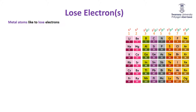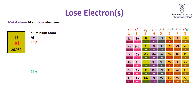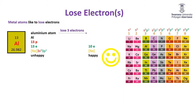Staying on that theme, let's move along a group to the icosagens, a good example being aluminium. Its electron configuration ends in 3s²3p¹ — three valence electrons, and it's unhappy. So it's going to want to lose those 3 electrons, giving it 10 electrons, making it happy with the neon electron configuration. The trouble is the charge difference is now 3, so we call this Al³⁺, and it is an aluminium cation.